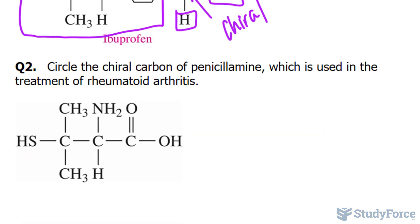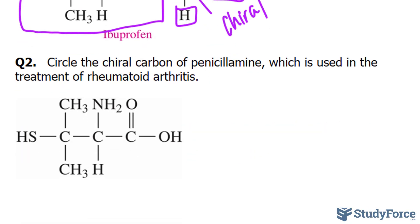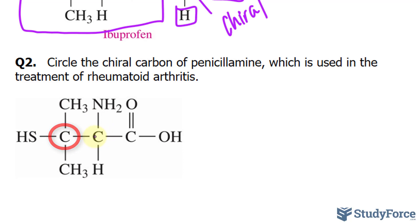Finally, in question two, circle the chiral carbon of penicillamine, which is used in the treatment of rheumatoid arthritis. So we need to find the carbon that has four attachments, four bonds. This one has four — one, two, three, four. And so does this one.